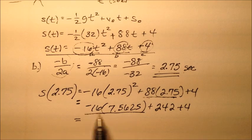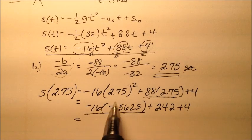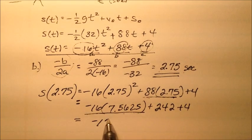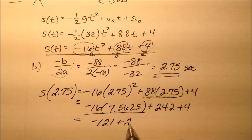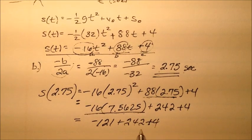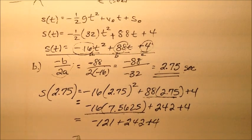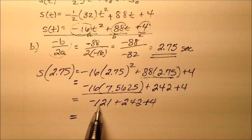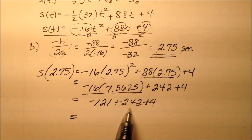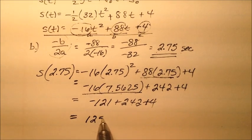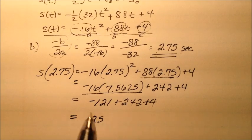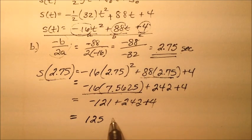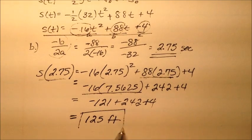As we go down, we multiply. -16 times that should be about -121. The rest comes down along for the ride. -121 plus 242 is positive 121, then plus 4 is 125. This is our position function. So 125 feet.